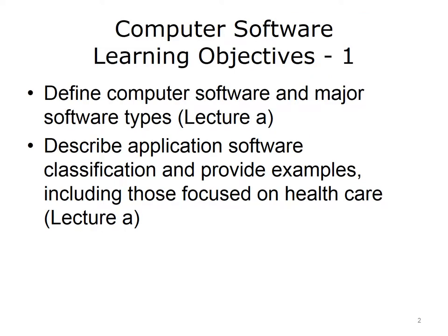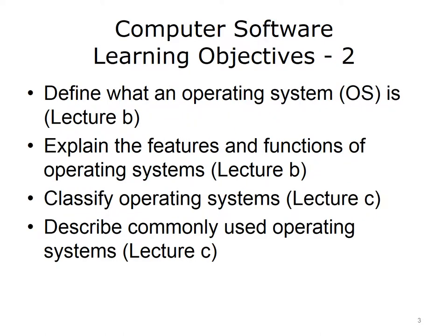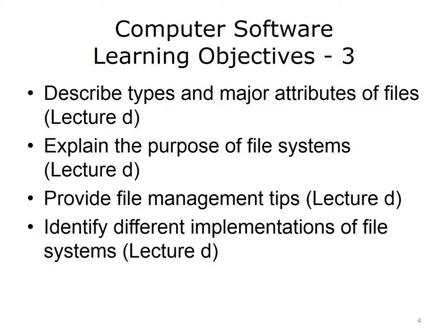The learning objectives for this unit, Computer Software, are to define computer software and major software types. Describe application software classification and provide examples, including those focused on healthcare. Define what an operating system is. Explain the features and functions of operating systems. Classify operating systems. Describe commonly used operating systems. Describe types and major attributes of files. Explain the purpose of file systems. Provide file management tips. Identify different implementations of file systems.